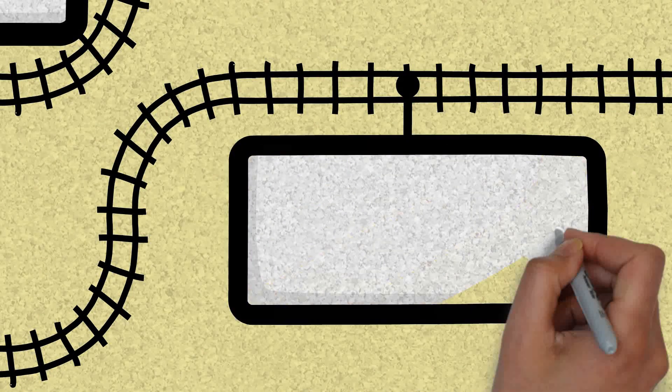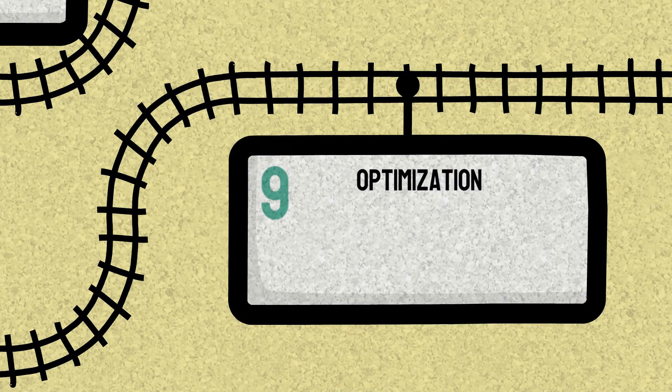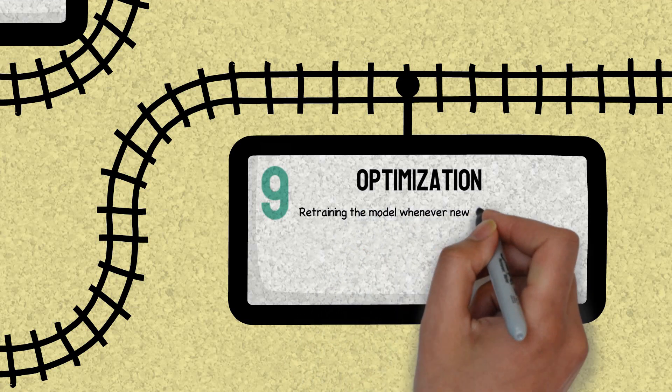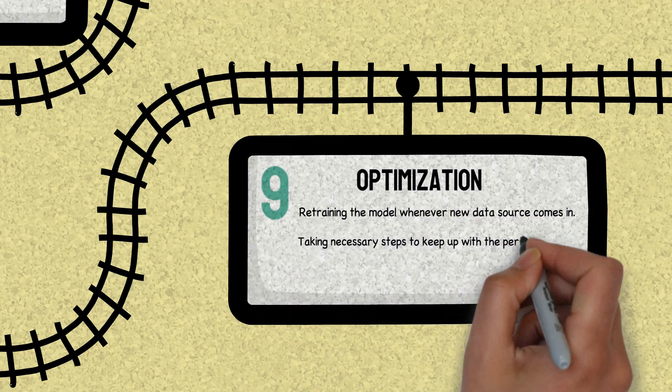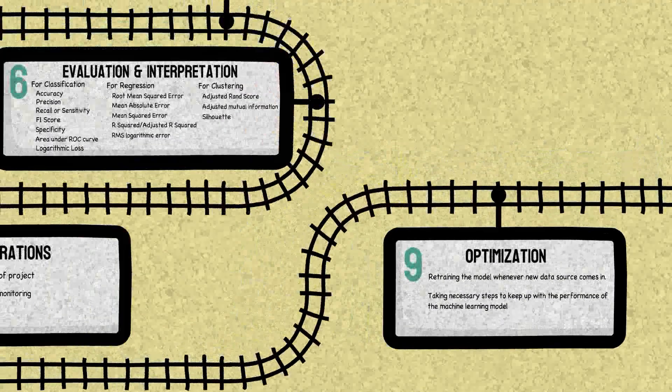Now whenever a new data set comes in, we need to pre-process the data and train the model on that data again and deploy it, taking into consideration that the performance should not decrease. Improvement is the only feasible option we have here.